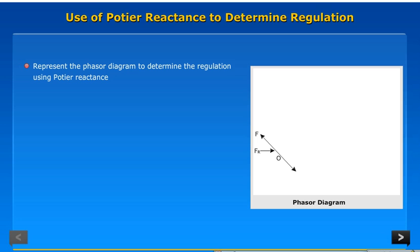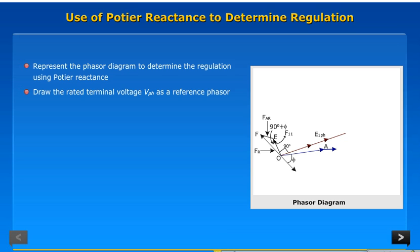Use of Potier reactance to determine regulation. Represent the phasor diagram to determine the regulation using Potier reactance. Draw the rated terminal voltage VPH as a reference phasor.